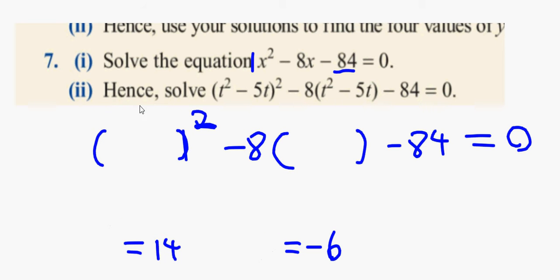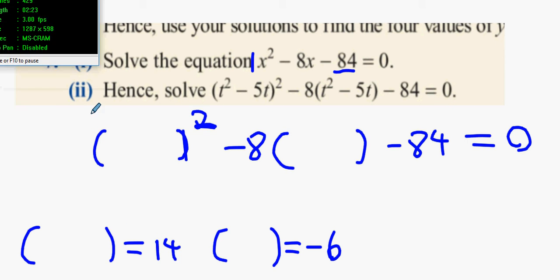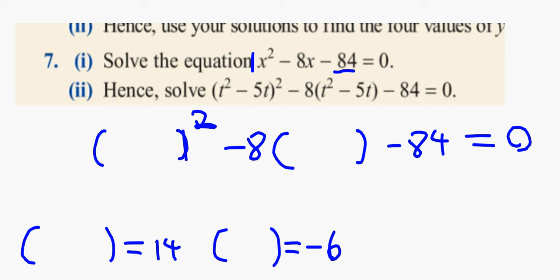Is there any questions thus far about what we've done? Let's put that in. Okay. So t squared minus 5t. T squared minus 5t. And then this is t squared minus 5t. Then this will be t squared minus 5t.